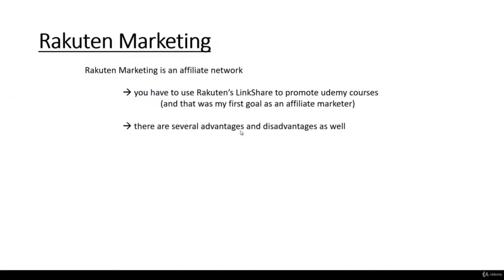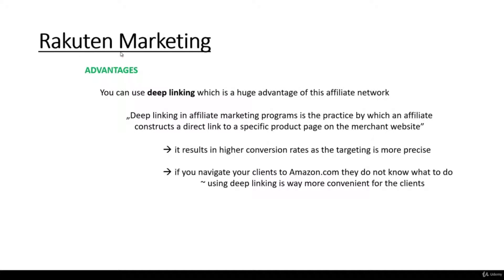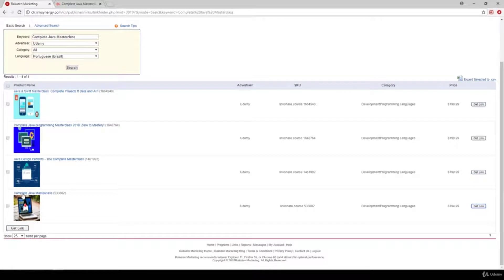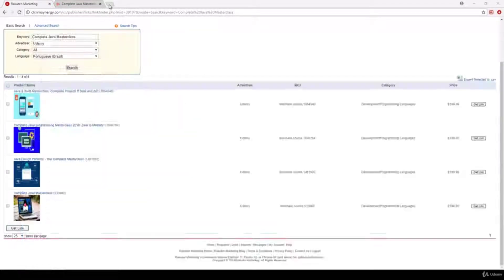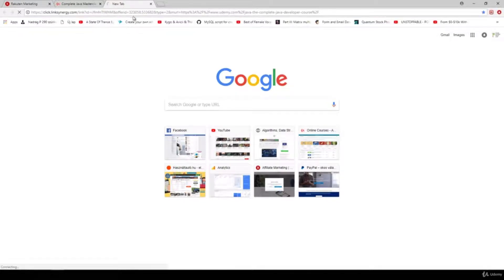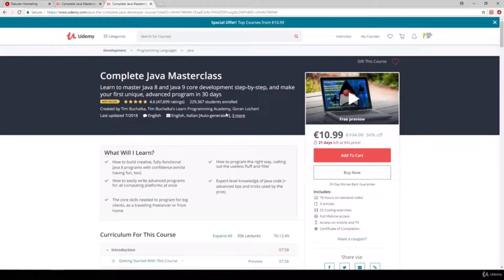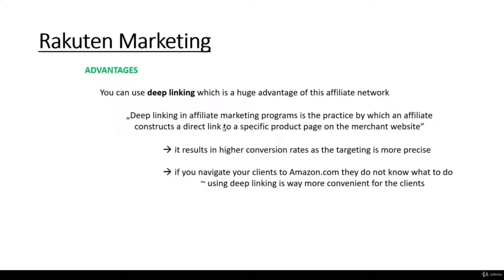There are several advantages and disadvantages. The main advantage for me is that I can promote Udemy courses. Another advantage of Rakuten Marketing is something called Deep Linking, which is a huge advantage of this network. Deep Linking in affiliate marketing is the practice by which an affiliate constructs a direct link to a specific product page on the merchant website. So if we use this affiliate link, it refers to a given product — this is called Deep Linking.